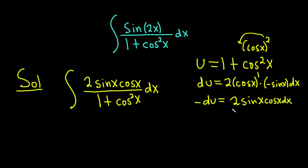And I did that because the goal is to make this look like what's in our integral. And here it is. Because it's exactly that, 2 sine x cosine x dx, that's exactly what we have here. So our integral now becomes negative du over u.